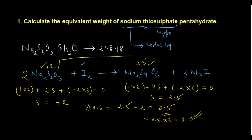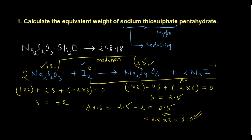Sulfur is undergoing oxidation here. In any redox reaction, the species that gets oxidized acts as the reducing agent. For iodine: in its elemental state the oxidation state is zero, and in NaI it is −1, so iodine undergoes reduction. Sodium thiosulphate reduces the iodine — that is why when you titrate the starch-iodine complex black color solution, sodium thiosulphate quickly decolorizes it by converting I₂ to NaI.